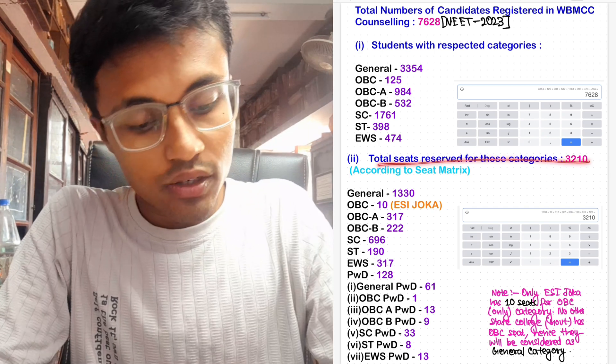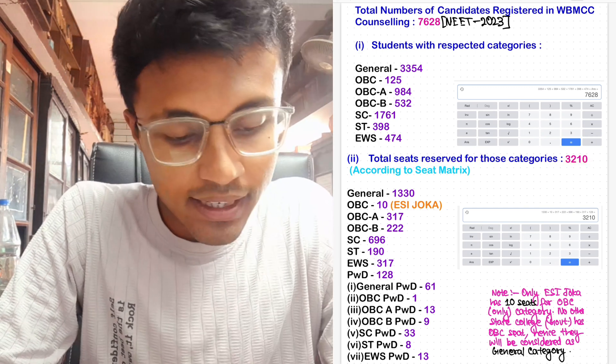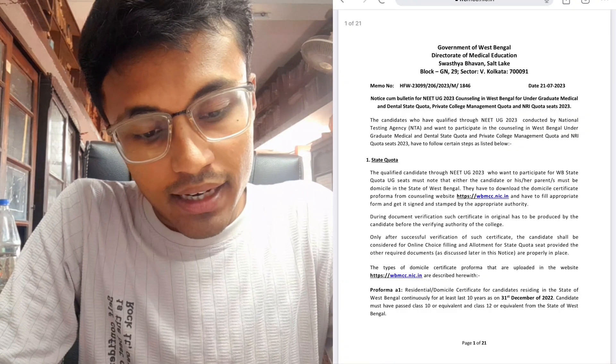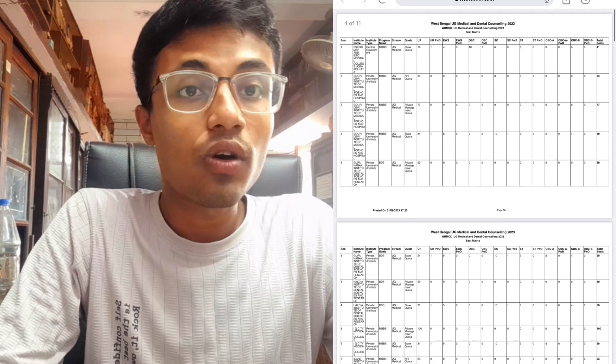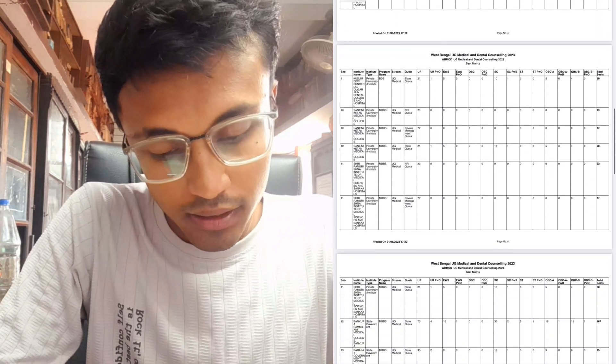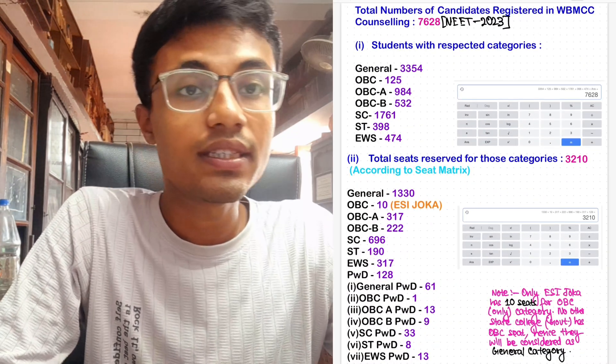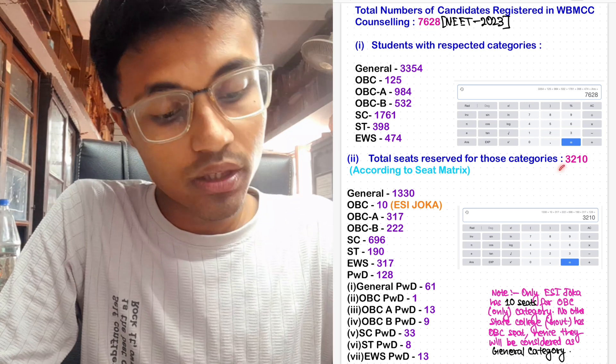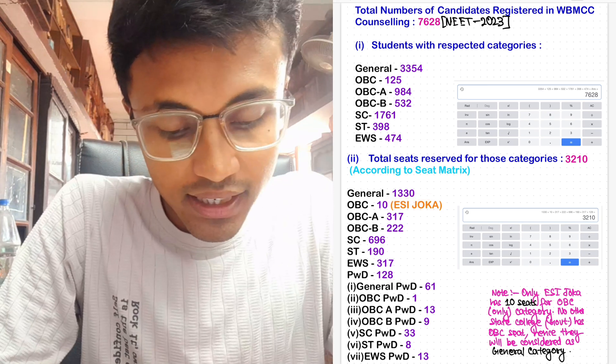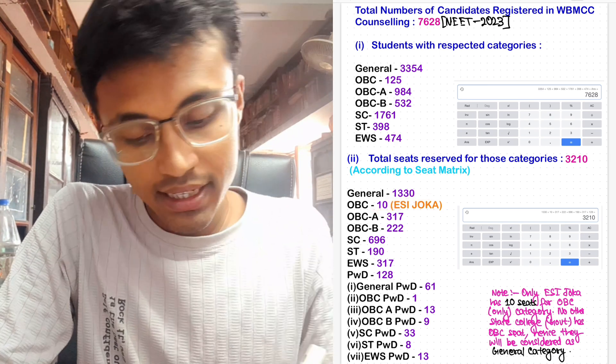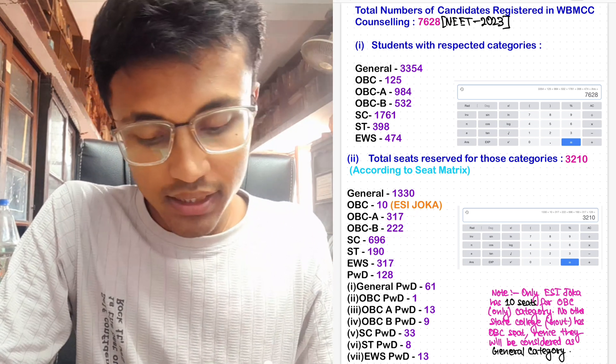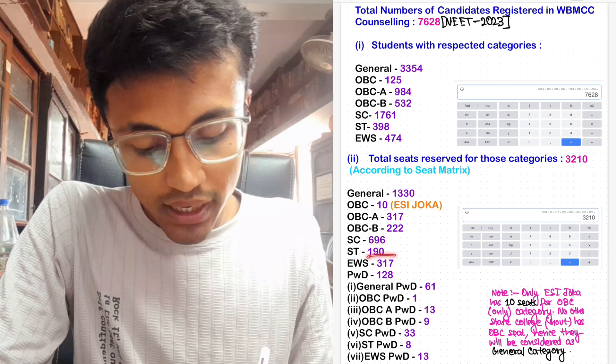Now the total seats reserved for those categories are 3,210. This is released by the NTA just a few days ago, and it shows you the total number of seats allotted in each college and under each category for MBBS and BDS students. The total number of seats this year reserved by the state of West Bengal is 3,210 for medical colleges, for which General has 1,330 seats, OBC has 10 seats, OBC-A has 317 seats, OBC-B has 222 seats, SC has 696 seats, ST has 190 seats, and EWS has 317 and PWD has 128 seats.